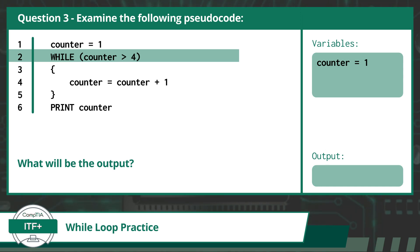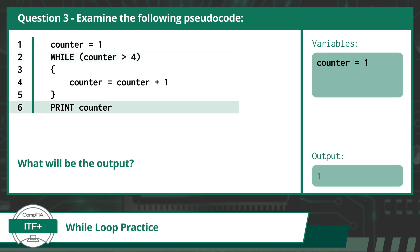Since the value of the variable counter, which is currently 1, is not greater than 4, we will not execute the code statements within the loop. This causes our program to move to the next line of code after the while loop, which happens to be line 6. On line 6, our program prints out the current value of counter, which is 1. So our answer to this question is 1.